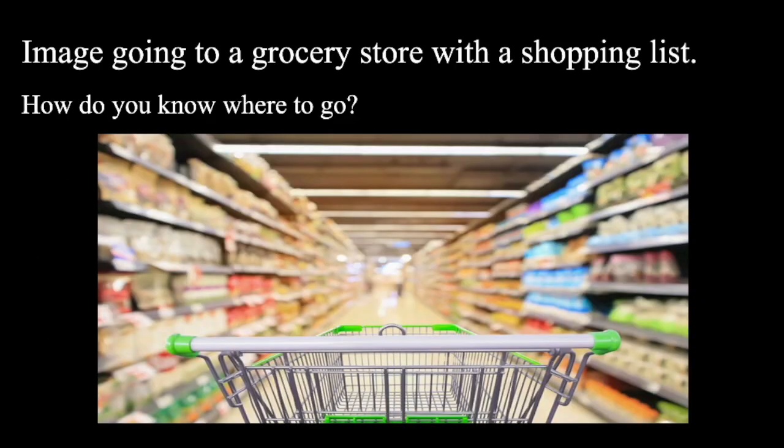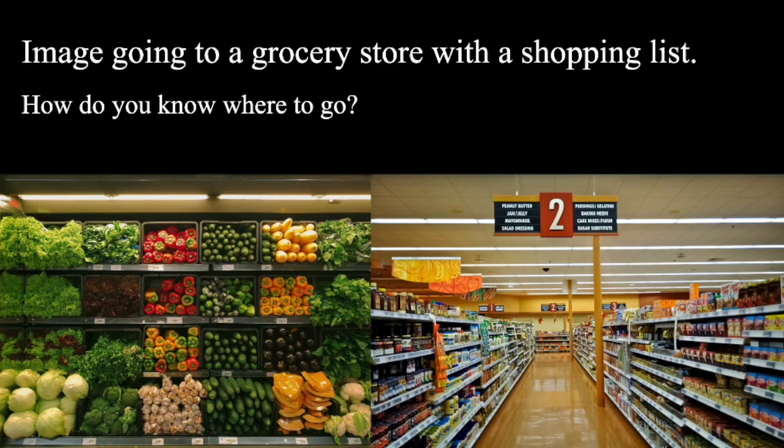Imagine going to a grocery store with a shopping list. How do you know where to go? You generally know where to find something based on the way the store is organized. The outer perimeter is fruits, vegetables, seafood, meat, and dairy, while the internal section has aisle numbers for user convenience, where items are grouped accordingly.